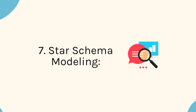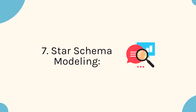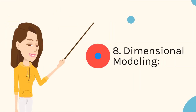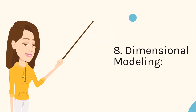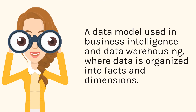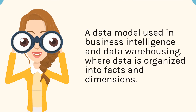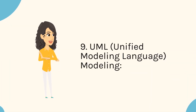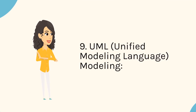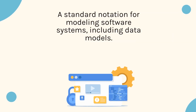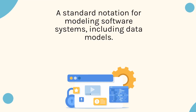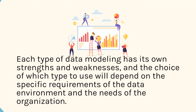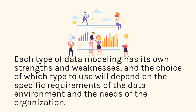7. Star Schema Modeling: A data model used in business intelligence and data warehousing, where data is organized into facts and dimensions. 8. UML (Unified Modeling Language) Modeling: A standard notation for modeling software systems, including data models. Each type of data modeling has its own strengths and weaknesses, and the choice of which type to use will depend on the specific requirements of the data environment and the needs of the organization.